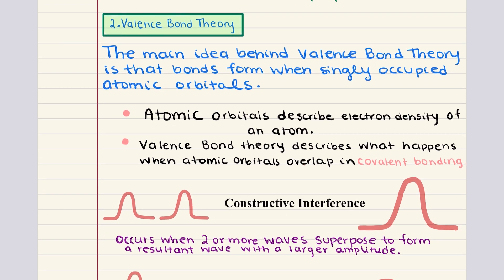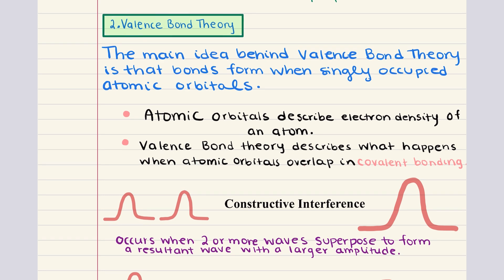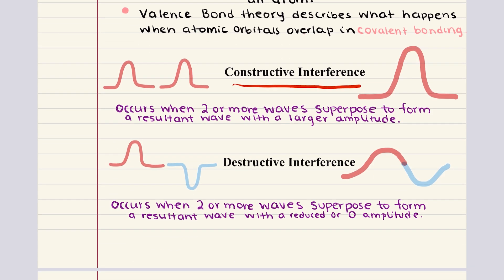This leads us into our second objective: valence bond theory. As a reminder, atomic orbitals are regions around an atom where electrons are likely to be found. These orbitals have specific shapes, such as the spherical s orbitals and the dumbbell-shaped p orbitals, which determine electron distribution and influence the electronic and reactive properties of atoms. According to valence bond theory, covalent bonding occurs when atomic orbitals from two atoms overlap, allowing electrons to be shared. When electrons are considered as waves, their interactions result in either constructive or destructive interference.